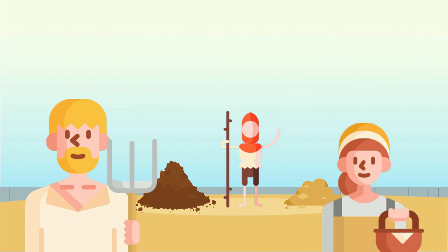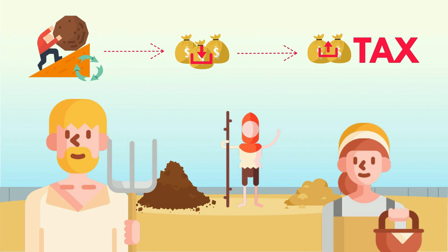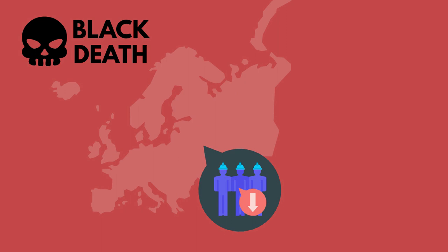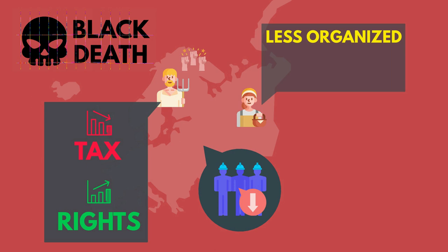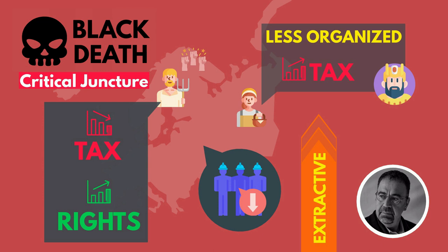Peasants worked hard to make a living but paid most of what they earned in taxes, and had almost no freedoms. But when the Black Death hit, there were suddenly huge shortages in labor. The peasants in Western Europe seized this opportunity to demand lower taxes and more rights. Eastern European peasants were not so lucky — they were less organized, and landowners managed to take advantage of this, hiking taxes higher and making the system even more extractive. This is why the authors call the Black Death a critical juncture: for Western Europe, it spelled the end of extractive feudalism, but in the East, it grew worse.